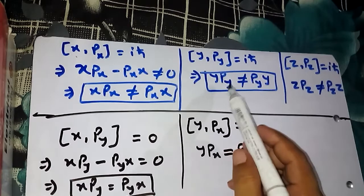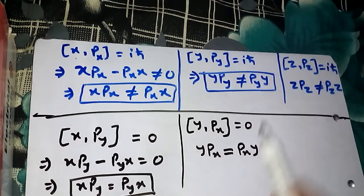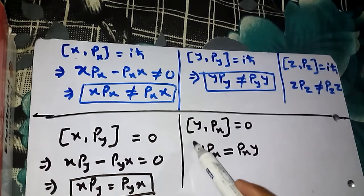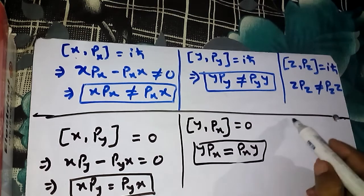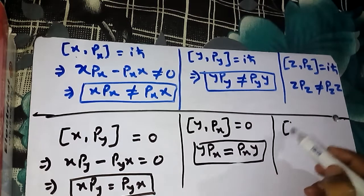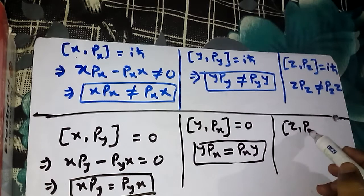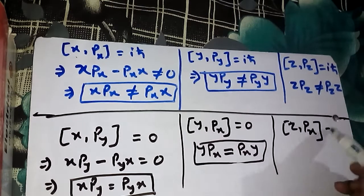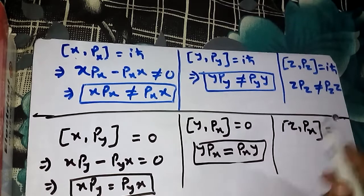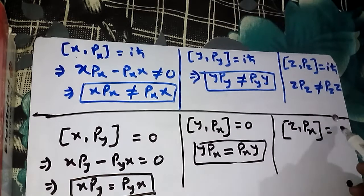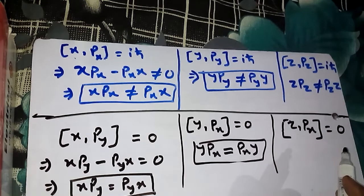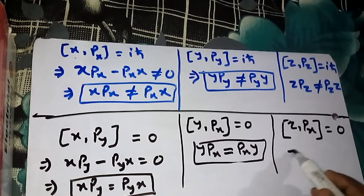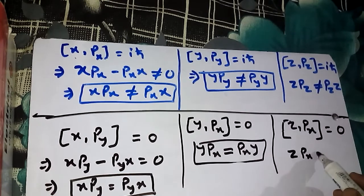Note that you are not allowed to interchange order when the commutator is iħ, a nonzero value. Similarly, for Z and Px — the Z component of position and X component of momentum — it equals zero, not iħ. So you can write that ZPx is the same as PxZ.